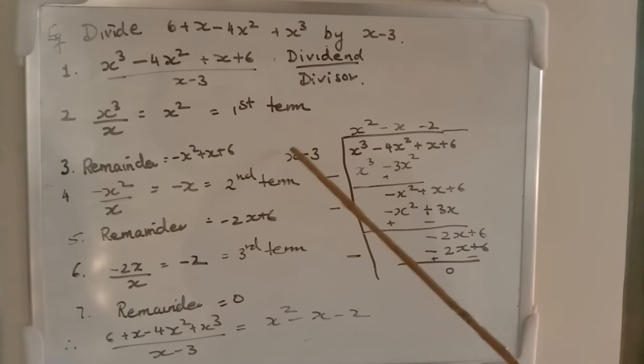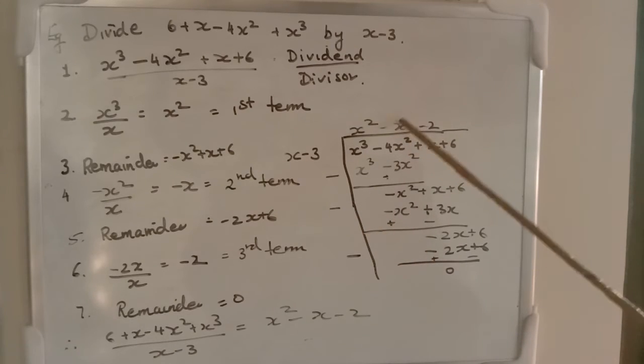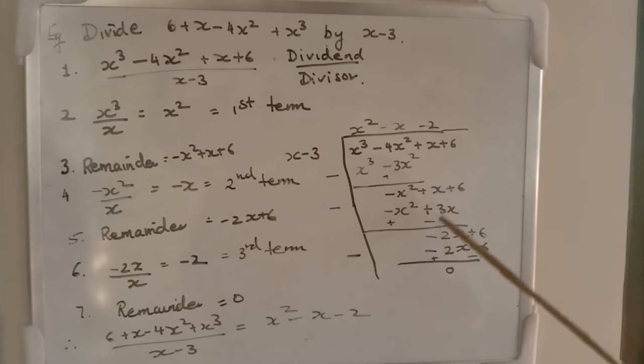Minus x, we will multiply now. -x into x, -x². -x into -3, plus 3x. Now, you subtract, get the remainder. This will be cut. You will get -2x + 6.